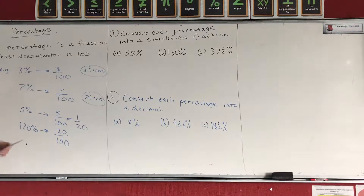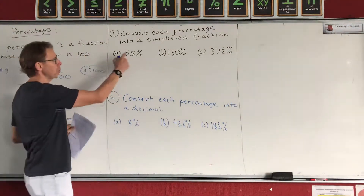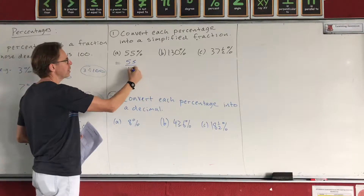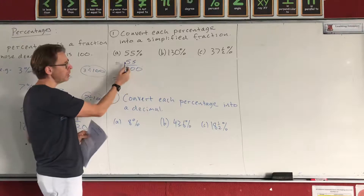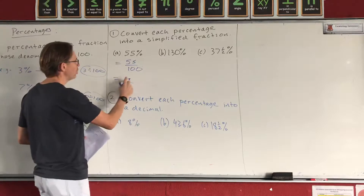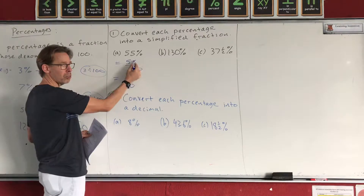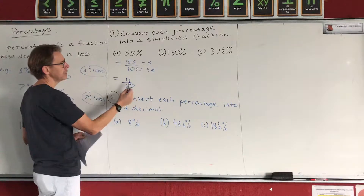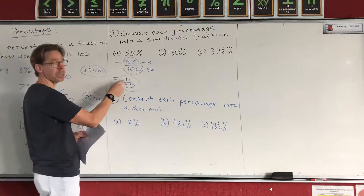Pause the video, write that down, then we're going to look at converting each percentage into a simplified fraction. Everything I do on the board I want you to copy. For the first question, 55% equals 55 over 100. You can use your calculator's fraction button — put 55 over 100 and press enter to get 11 over 20. Without a calculator, divide numerator and denominator by 5 to get 11 over 20. Simplifying gets you full marks.